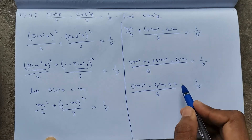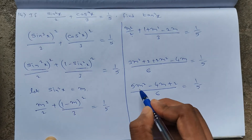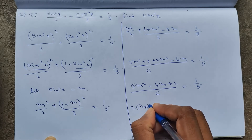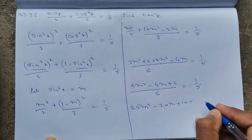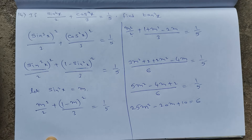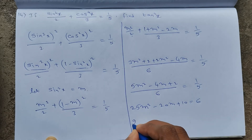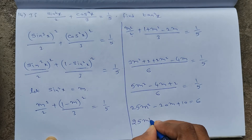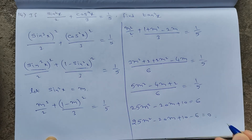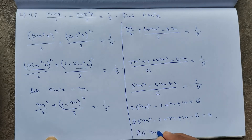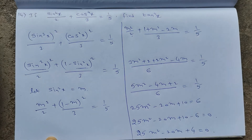Cross-multiplying: 5(5M² − 4M + 2) = 6, giving 25M² − 20M + 10 = 6, so 25M² − 20M + 4 = 0.